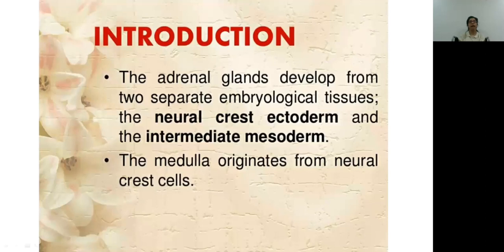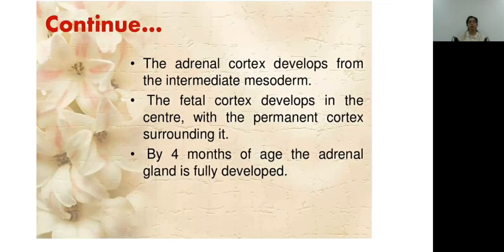Introduction. The adrenal glands are developed from two separate embryological tissues, i.e., the neural ectoderm and the intermediate ectoderm. The medulla originates from the neural crest cells. The adrenal cortex develops from the intermediate ectoderm. The fetal cortex develops in the center with the permanent cortex surrounding it. By 4 months of age, the adrenal gland is fully developed.